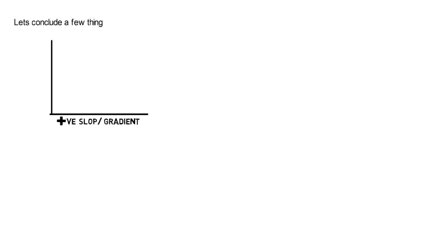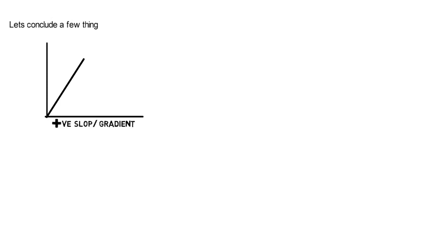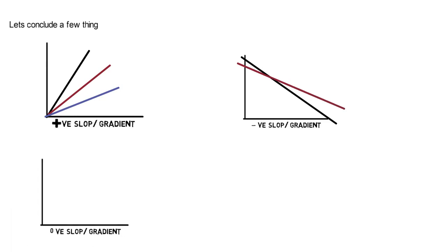Let's conclude a few things. Always remember, the line that's upward sloping always gives us positive gradient or positive slope. The line that is downward sloping always gives us negative gradient or slope.